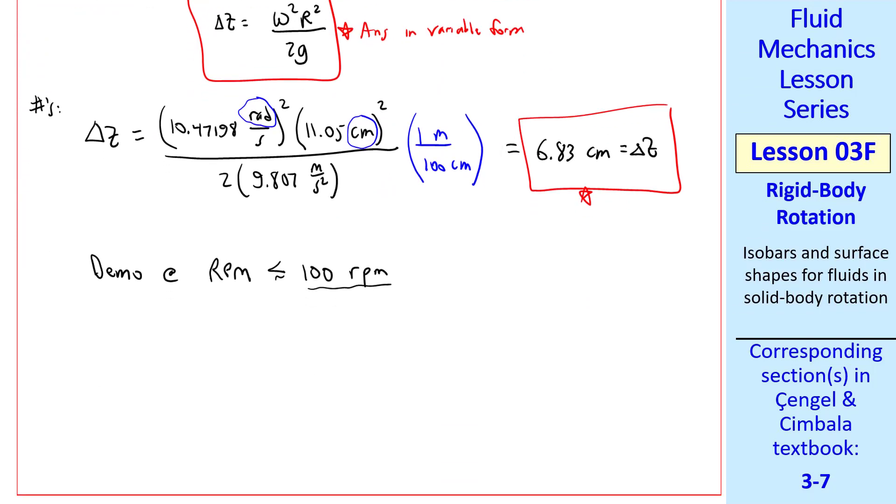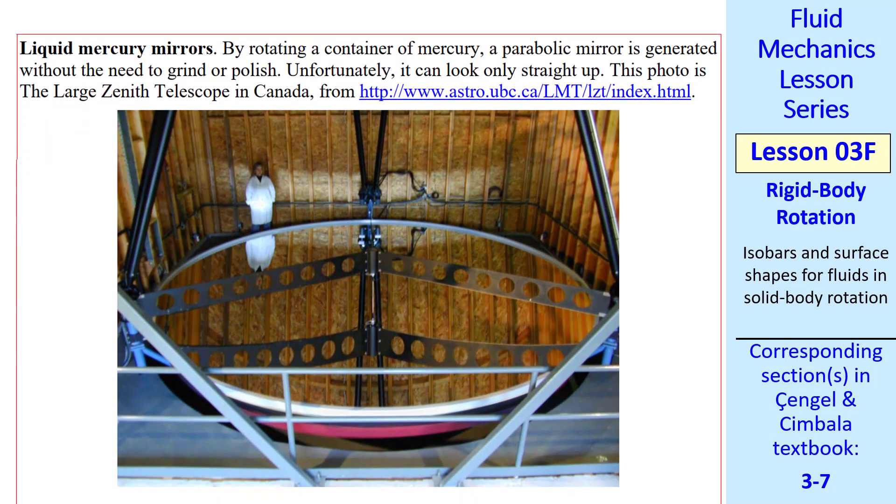With that, we can do an application. Suppose we use mercury as our liquid. People actually create parabolic mirrors without having to grind or polish the glass by using a liquid and just rotating it. You can imagine this would have to have very good bearings and rotate at a constant speed, but you get a nice parabolic shape. And liquid mercury is very reflective, so we have a parabolic mirror.